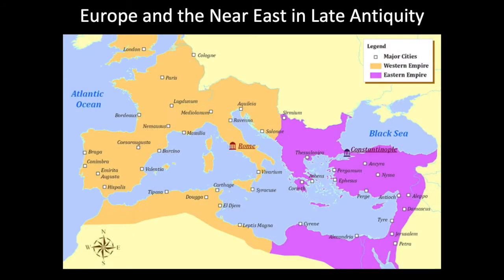Unfortunately, the empire does not stay united and splits into eastern and western halves once again. The map I want to point out shows where we're looking today: the city of Rome in Italy, slightly above that the city of Ravenna, and on the eastern half of the empire, the city of Constantinople.